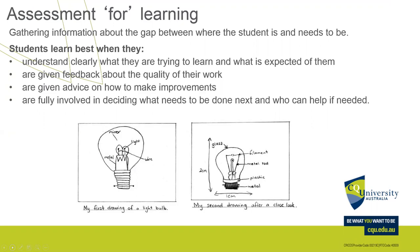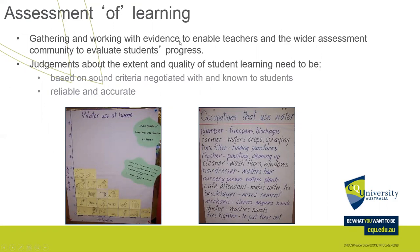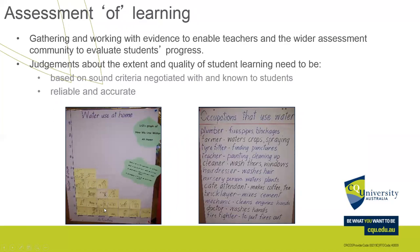Assessment for learning — we covered this in this week's material — it's gathering information about the gap between where a student is and where they need to be. Students understand clearly what they're trying to learn and what's expected of them; they're given timely and relevant feedback, given advice, and are fully involved in deciding what needs to be done next. Assessment of learning: gathering evidence to enable teachers to evaluate students' progress and make judgments about the quality of student learning, based on sound criteria negotiated with and known to students, and it must be reliable and accurate.